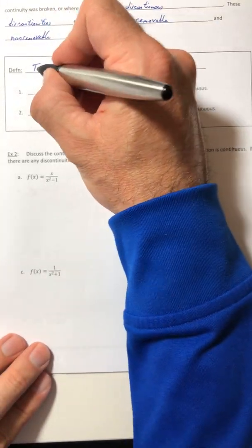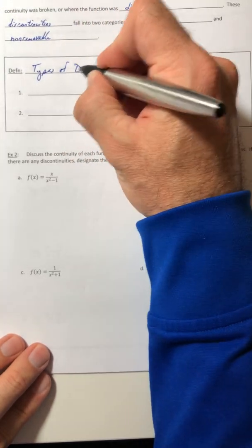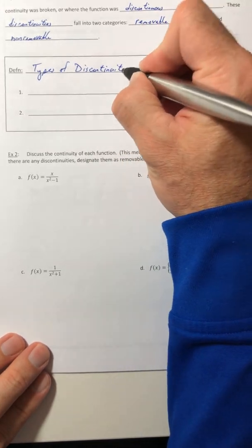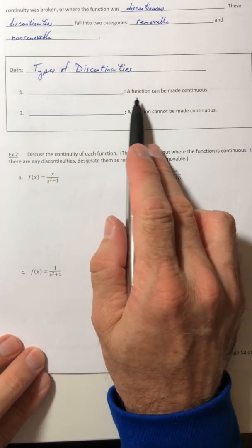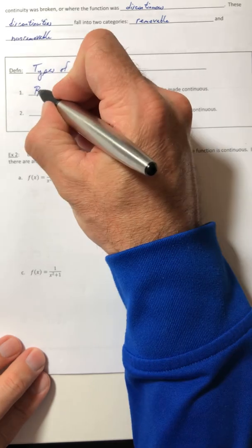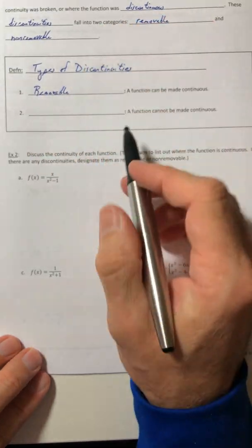This is types of discontinuities. The first one, the function can be made continuous. That is when you have a removable discontinuity.